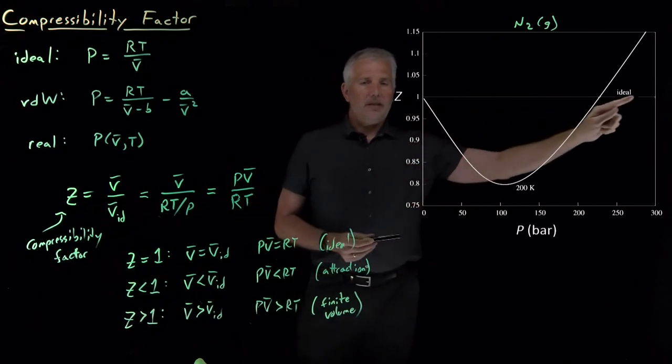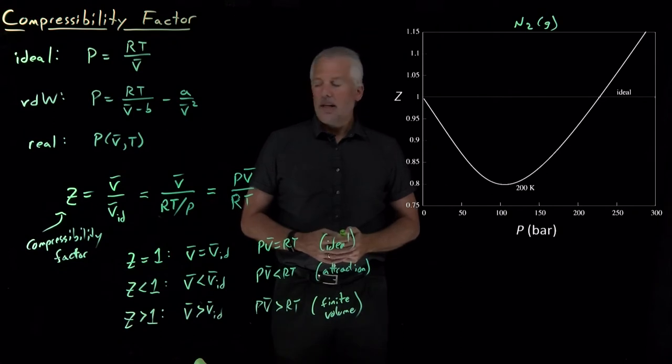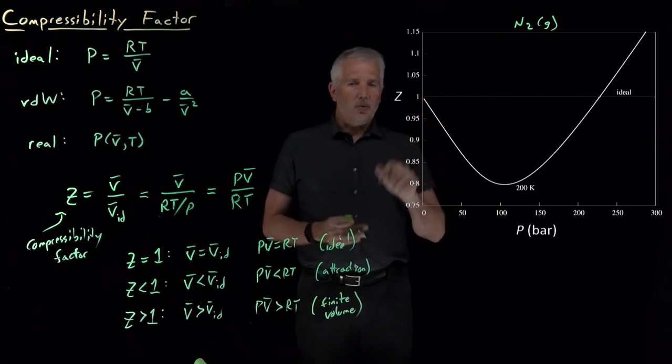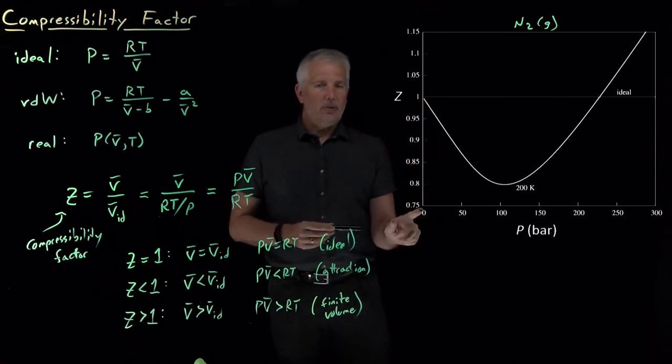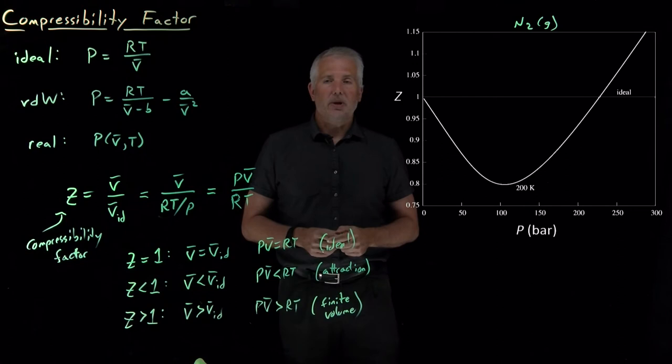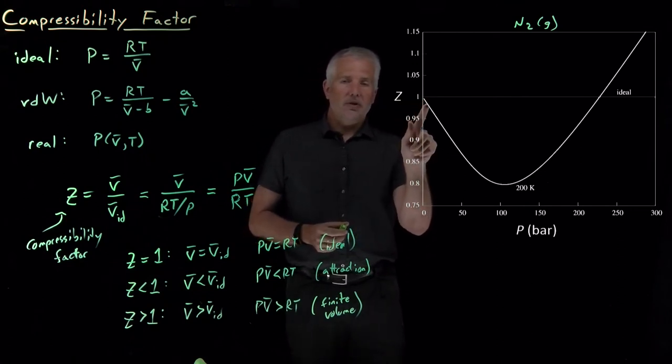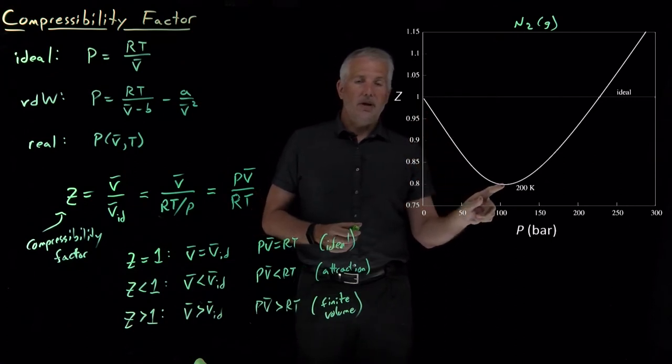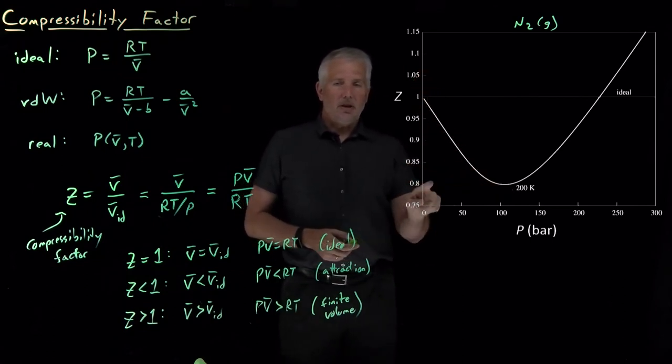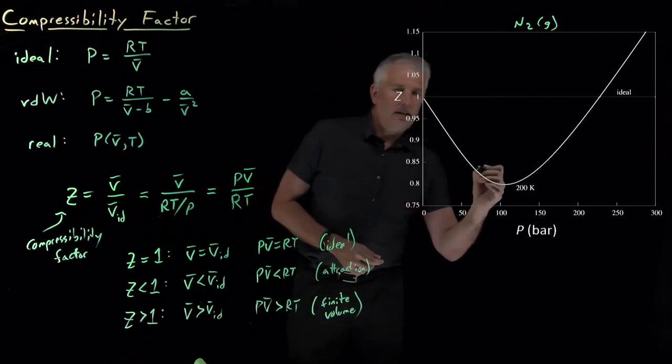The flat line here, Z equals one, shows what the compressibility factor would be if the gas behaved ideally. The compressibility factor starts at one—at very low pressures near zero, the gas does behave like an ideal gas. As we increase to pressures of one or two or ten or all the way up to 100 bars, the compressibility factor has gotten much smaller, only about 80 percent of what the ideal gas volume would be.